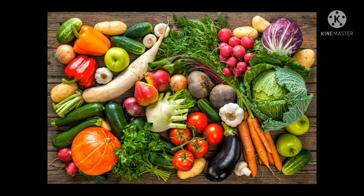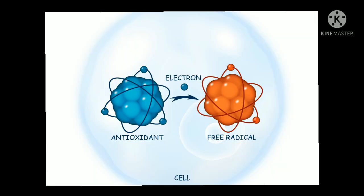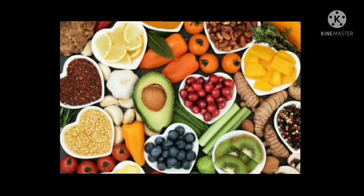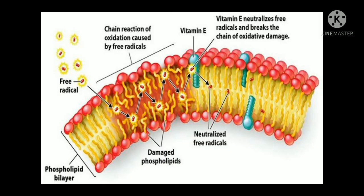Antioxidants present in the food we take also keep free radicals in check, as they donate an electron to free radicals. Some well-known antioxidants include beta-carotene, vitamin C, vitamin E, lycopene, glutathione, uric acid, and other phytonutrients.